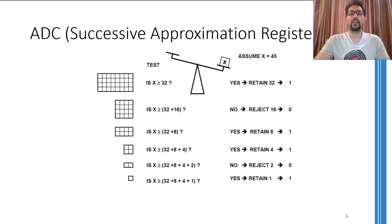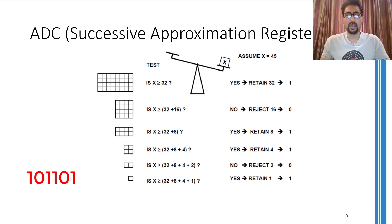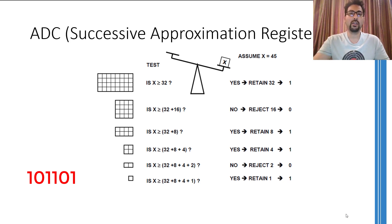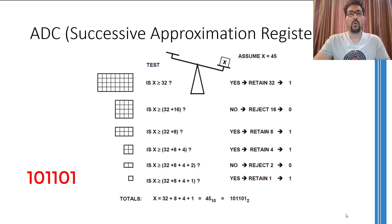In the sixth and final step we set the least significant bit to 1, and the analog signal corresponding to the SAR content is now 45. Comparing 45 with the analog input of 45 yields a positive saturation value from the comparator, so we retain this 1. After going through 6 cycles we have converted the analog input level of 45 into the digital number 101101.